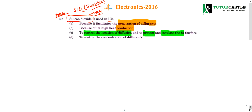Let us see the options. First option: it facilitates the penetration of diffusion — no. SiO₂ is an insulator; it should not allow penetration. So eliminate that. Second option: because of its high heat conduction — it doesn't conduct, it's an insulator. Eliminate this too. So by knowing one point — that SiO₂ is an insulator — you can easily conclude from the third option.